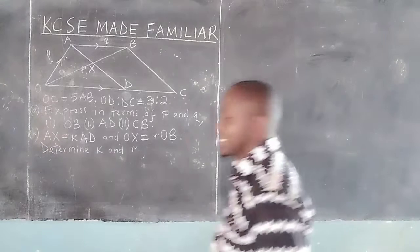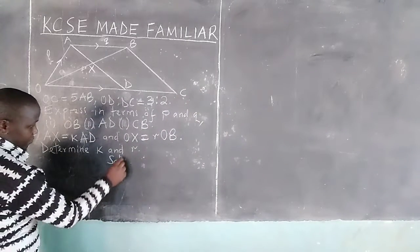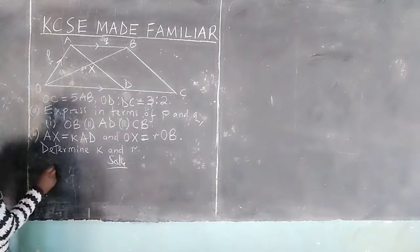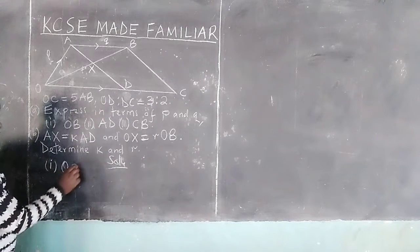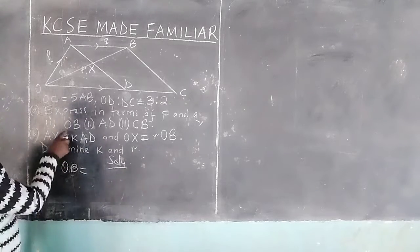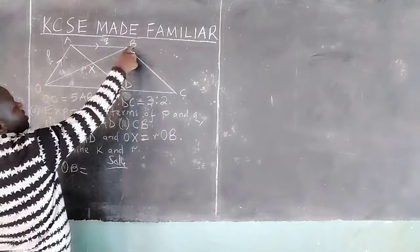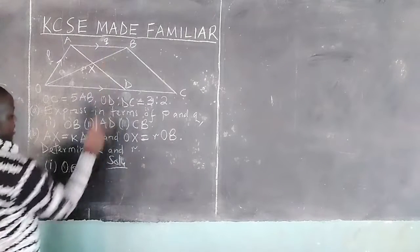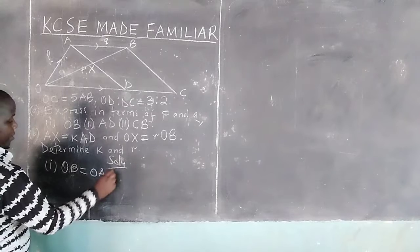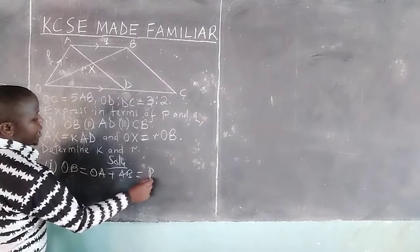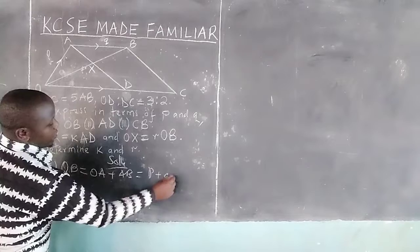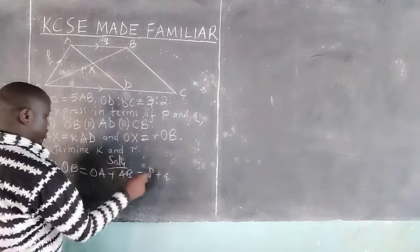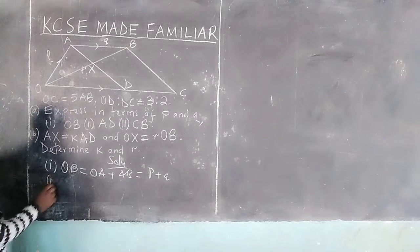Vector OB can be gotten when we follow the route O, A, then A, B. Therefore OA plus AB, which will be P plus Q. So vector OB equals P plus Q. That is how we get the first vector.